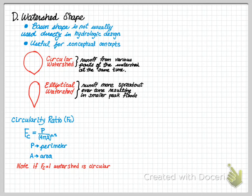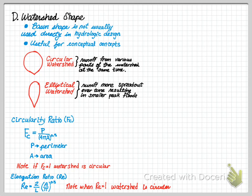To calculate the circularity ratio, you need to know the perimeter of the watershed and the area of the watershed. If the circularity ratio is perfectly 1, you have a circular watershed. Another useful term is the elongation ratio, which describes how long or how much we are stretching that watershed. The elongation ratio is the square root of the area over pi, times 2, divided by the length. Again, if this equals 1, we have a circular watershed. Pause the video and prove to yourself that both equations equal 1 by substituting the circumference and area of a circle — everything will cancel out, leaving an answer of 1.